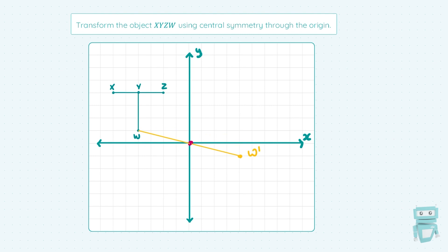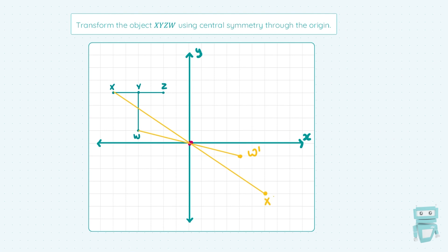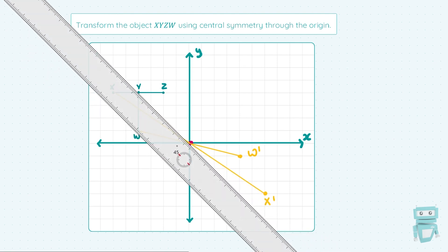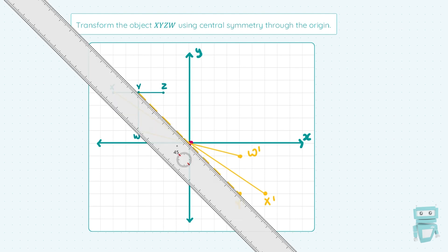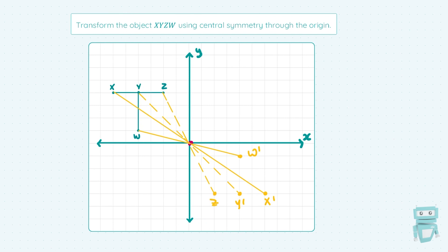Let's go ahead and take point X and do the same. We'll line our ruler up with X and the origin, take the distance from X to the origin, and come out that exact same distance the other side. Alternatively, you could count the boxes. We get our point and call it X prime. We're going to do the same for Y — line Y up with the origin, measure the distance from Y to the origin, and come out that exact same distance the other side. We'll plot our point and call that Y prime. Finally, we're going to do the same for Z: line Z and the origin up, measure the distance from Z to the origin, and come out that exact same distance the other side. We'll plot our point and call this translated point Z prime.